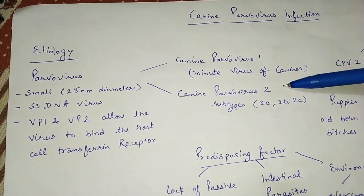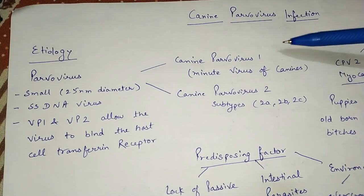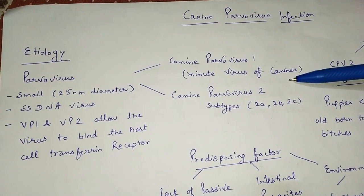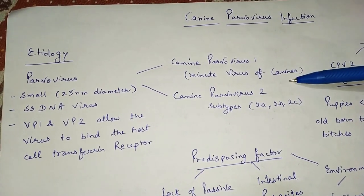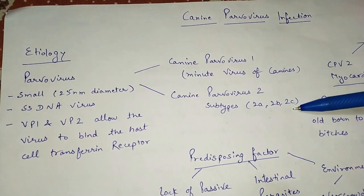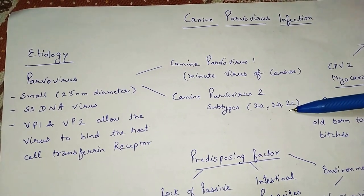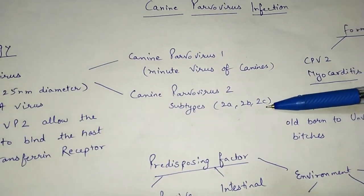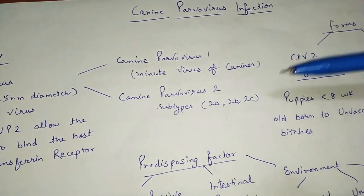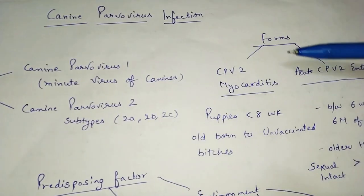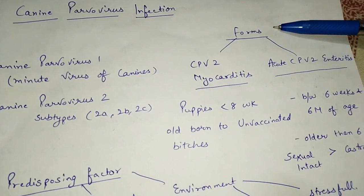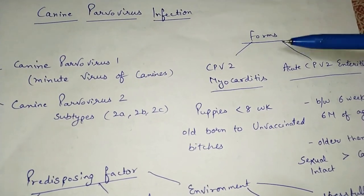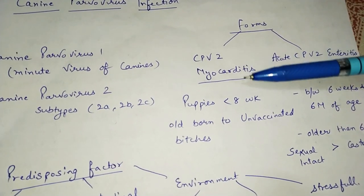Parvoviruses are of two types: canine parvovirus 1 and canine parvovirus 2. Canine parvovirus 1 is the minute virus of canines. Canine parvovirus 2 has subtypes 2a, 2b, and 2c.